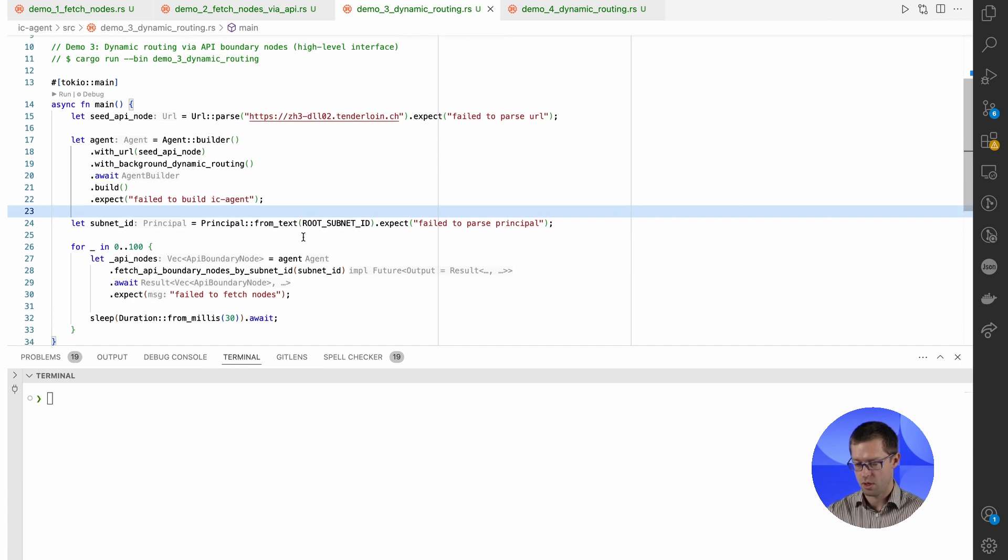Now, in this demo, I will perform 100 requests, same as I did before, to fetch all existing API boundary nodes. And let's see how it's going to perform.